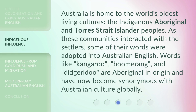Australia is home to the world's oldest living cultures — the indigenous Aboriginal and Torres Strait Islander peoples. As these communities interacted with the settlers, some of their words were adopted into Australian English. Words like kangaroo, boomerang, and didgeridoo are Aboriginal in origin and have now become synonymous with Australian culture globally.